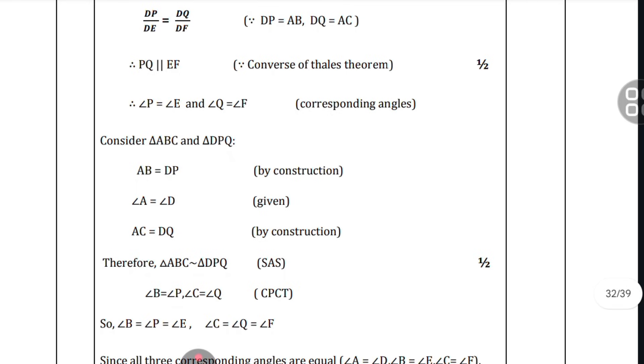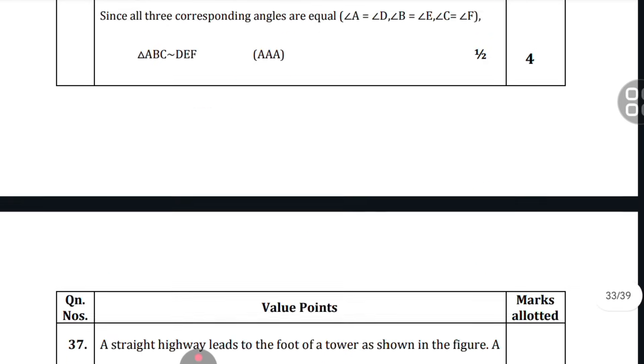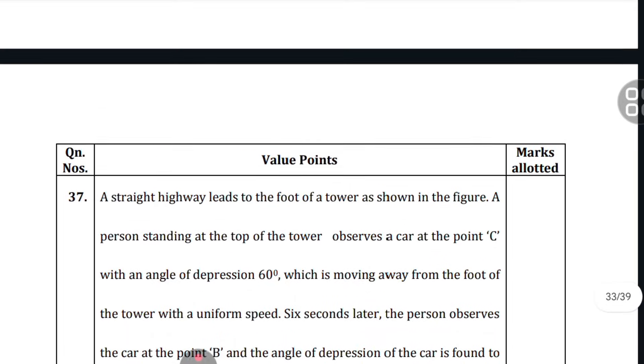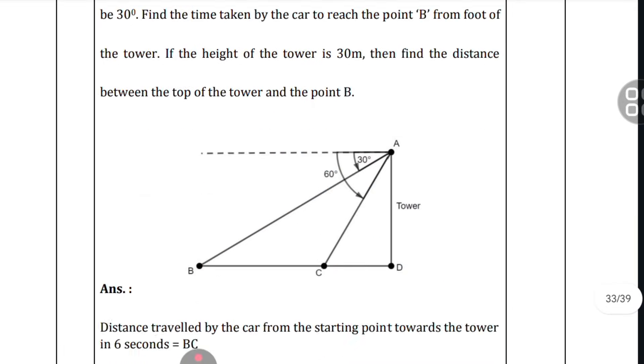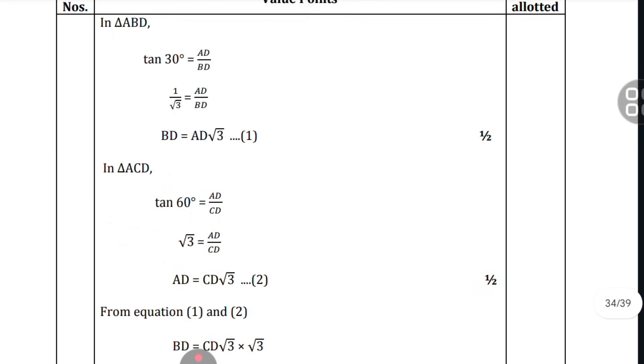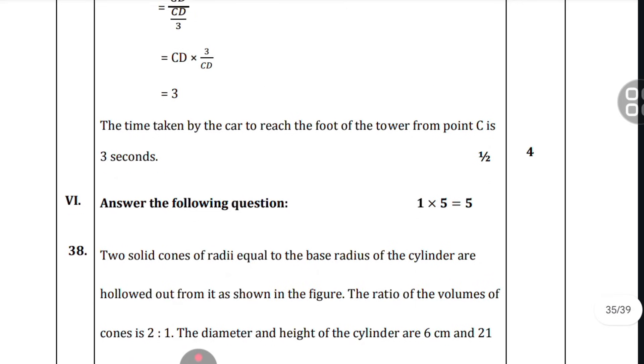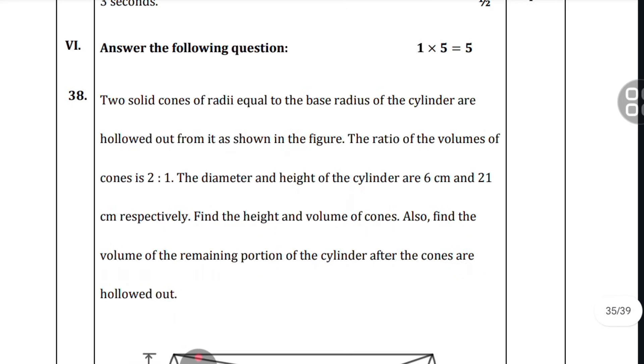If you don't write this, you will not get full marks in theorems. Please write: by construction, data, construction, congruency DP equals DK equals AC, converse of Thales theorem. These are the points in brackets you should write into the answer sheet for theorems. This is from application of trigonometry.